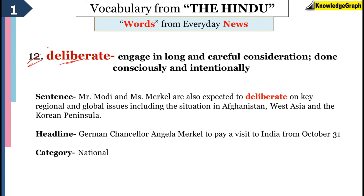The next word is deliberate. Deliberate basically means intentionally — so instead of saying 'he intentionally did it,' you can say 'he deliberately did it.' Do remember, deliberate means conscious and intentional — you are very conscious of what you are doing intentionally. But in some situations, as in the next sentence, deliberate also means a careful discussion or consideration around a certain topic. The sentence was: 'Mr. Modi and Ms. Merkel are expected to deliberate on key regional and global issues including the situation in Afghanistan, West Asia, and the Korean peninsula' — meaning they are going to have a careful discussion around those particular topics.